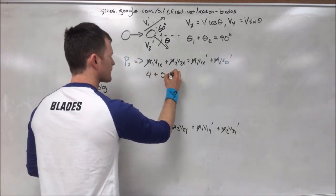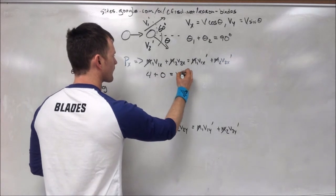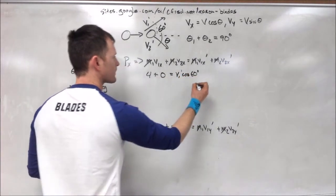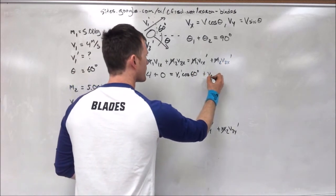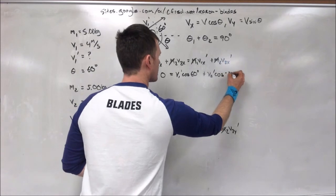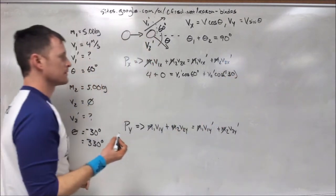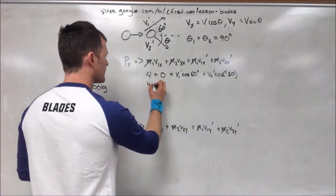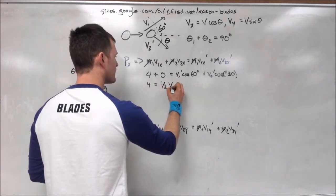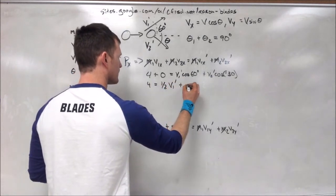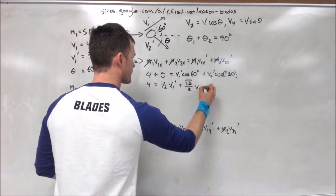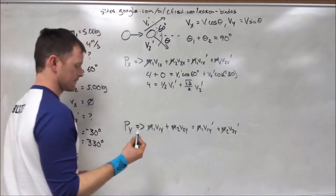Now, our x component of velocity for the first object is exactly 4. We assume that the object is traveling exactly horizontally. I'm also writing in the trigonometric calculations for the x components of the velocities after the collision. We know the angles, so we can write these in. So, we have 4 equals 1 half, which is cosine of 60, times v1 prime, plus the square root of 3 over 2, times v2 prime.